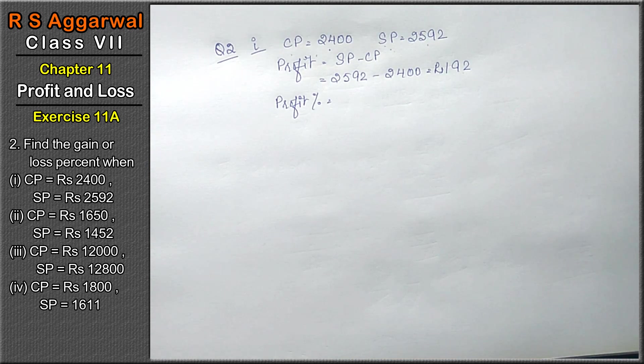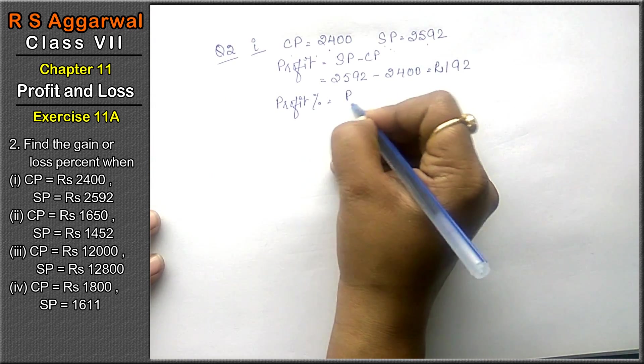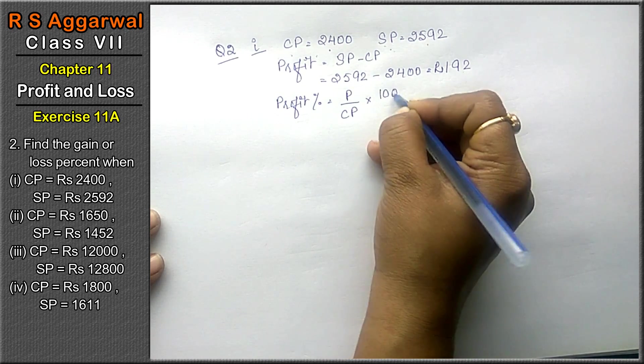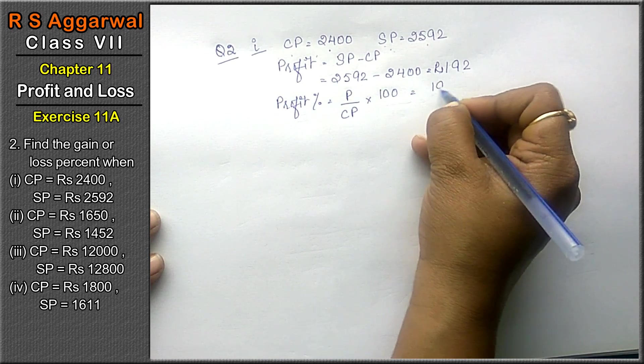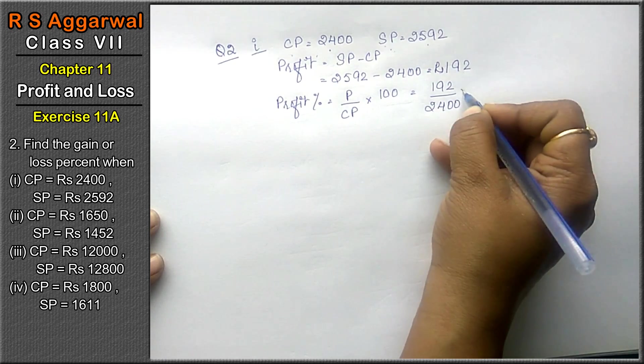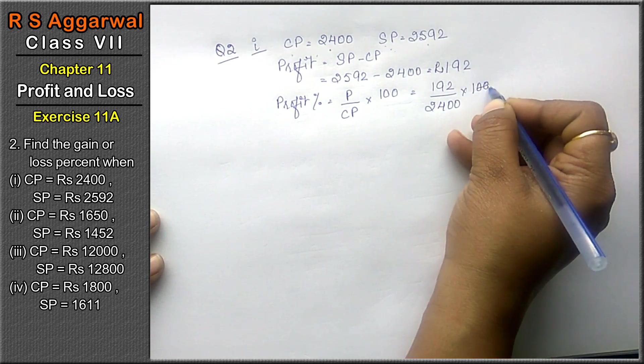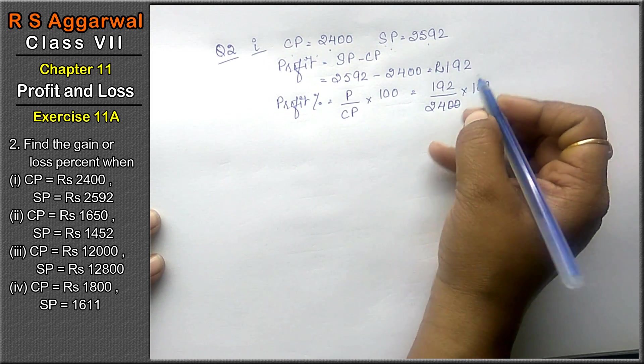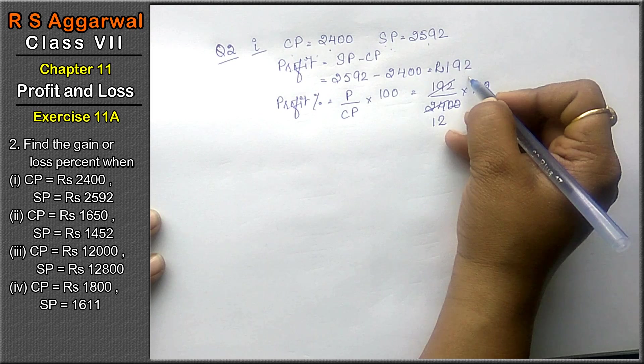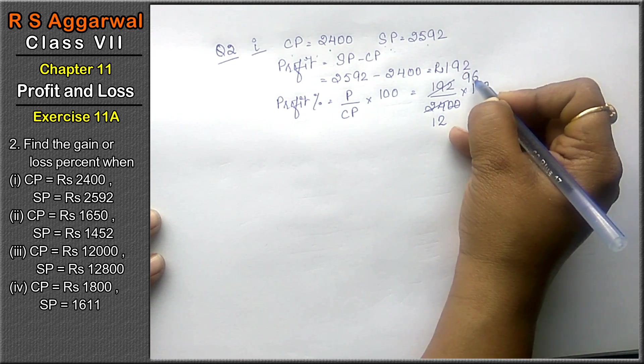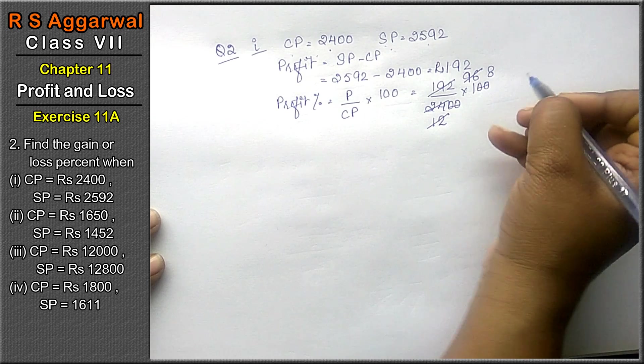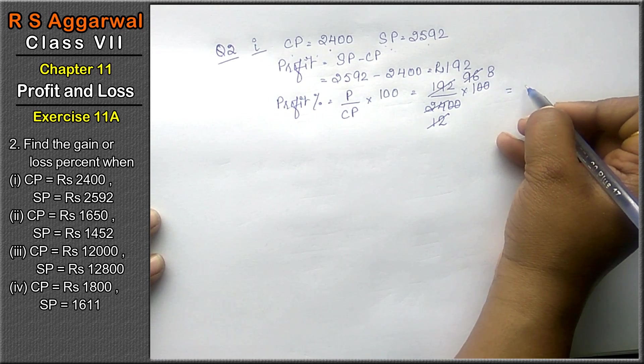Now we have to take out the profit percent. The formula for profit percent is profit upon CP into 100. Now profit was 192, CP was 2400 into 100. Canceling gives us 8. That means we are getting gain of 8%. Profit percentage is 8%.